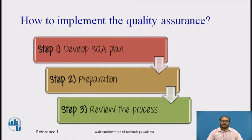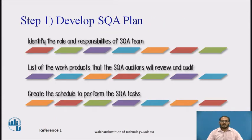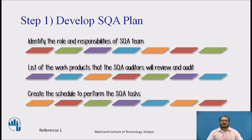How to implement quality assurance: Step one is to develop a software quality assurance plan. Testing activity needs a test plan; likewise, software quality assurance activity also needs a plan called a software quality assurance plan. The goal of the SQA plan is to craft a planning process and procedure to ensure that the products or services delivered by the organization are of exceptional quality. During project planning, the test manager makes a software quality assurance plan where the software quality assurance is scheduled periodically.